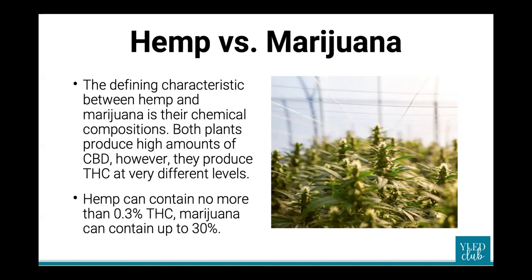Both plants produce high amounts of CBD, however they produce THC at different levels. Hemp can contain no more than 0.3 percent THC, where marijuana can contain up to 30 percent — a huge difference. Hemp plants produce CBD oil, hemp oil, and cannabis oil and are properly used for textiles, seeds, and oils. These plants can also grow as high as 20 feet with leaves bunched near the top of the stem.